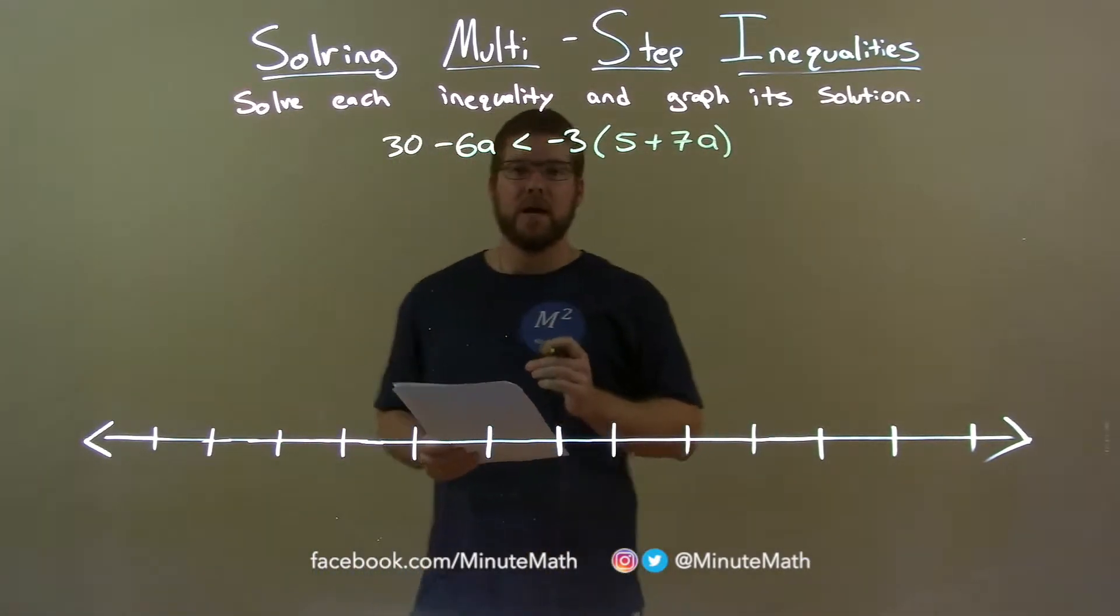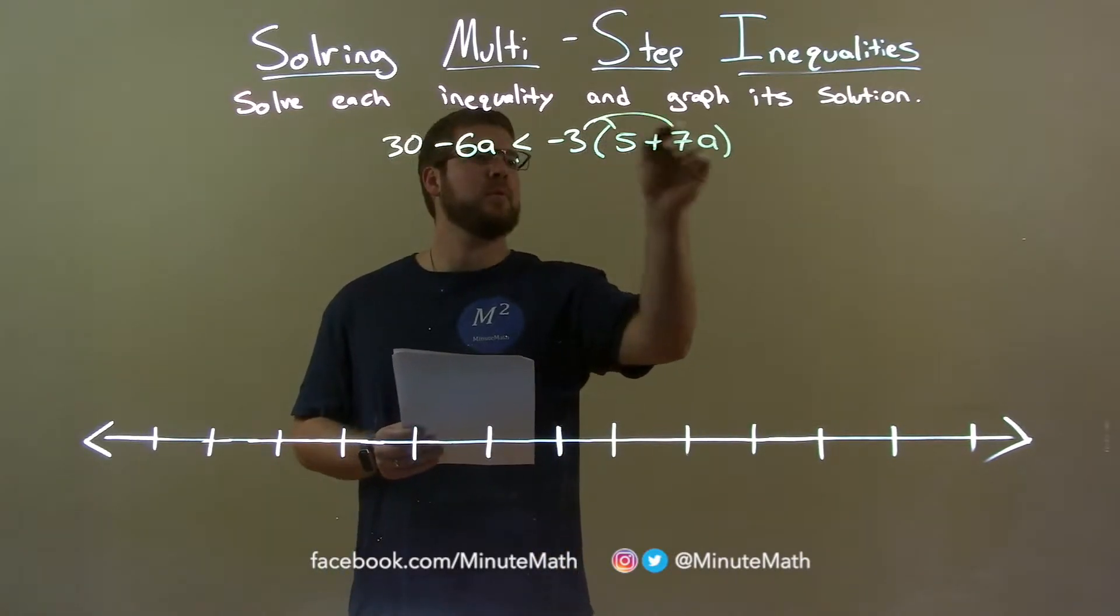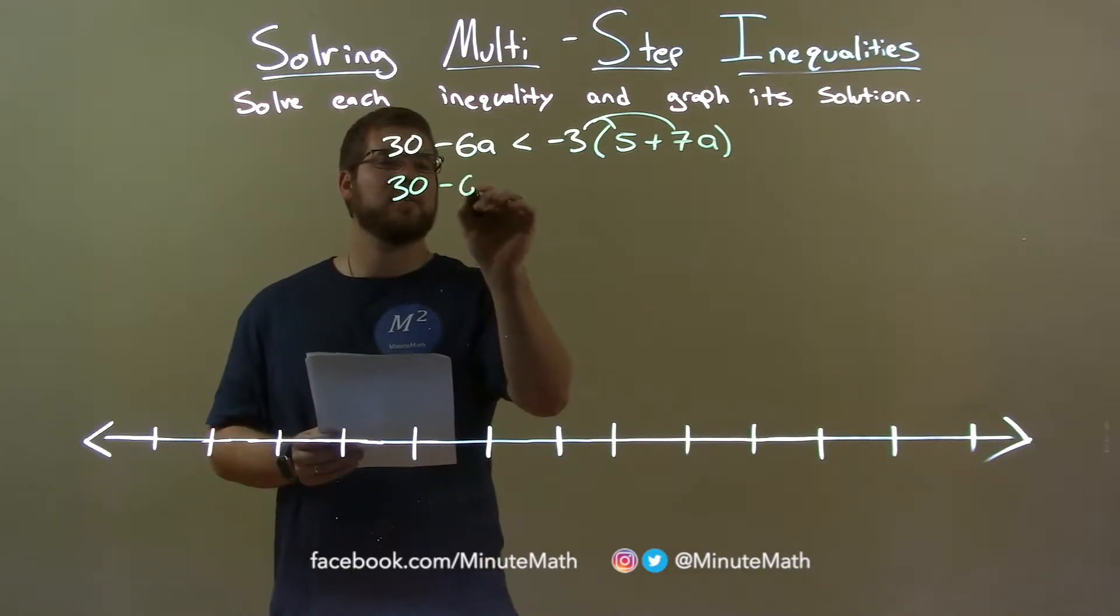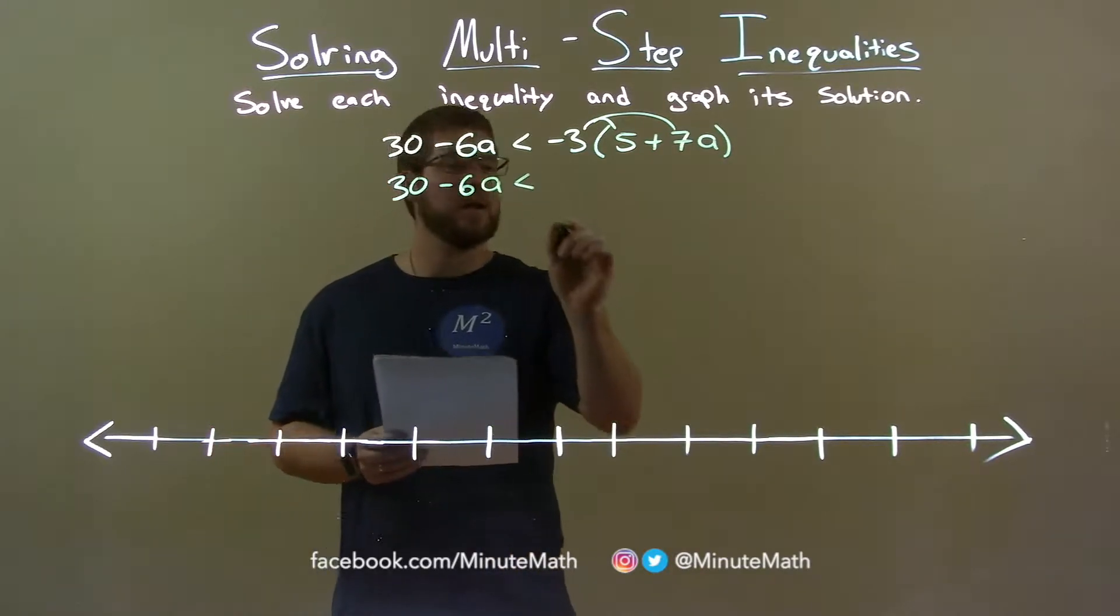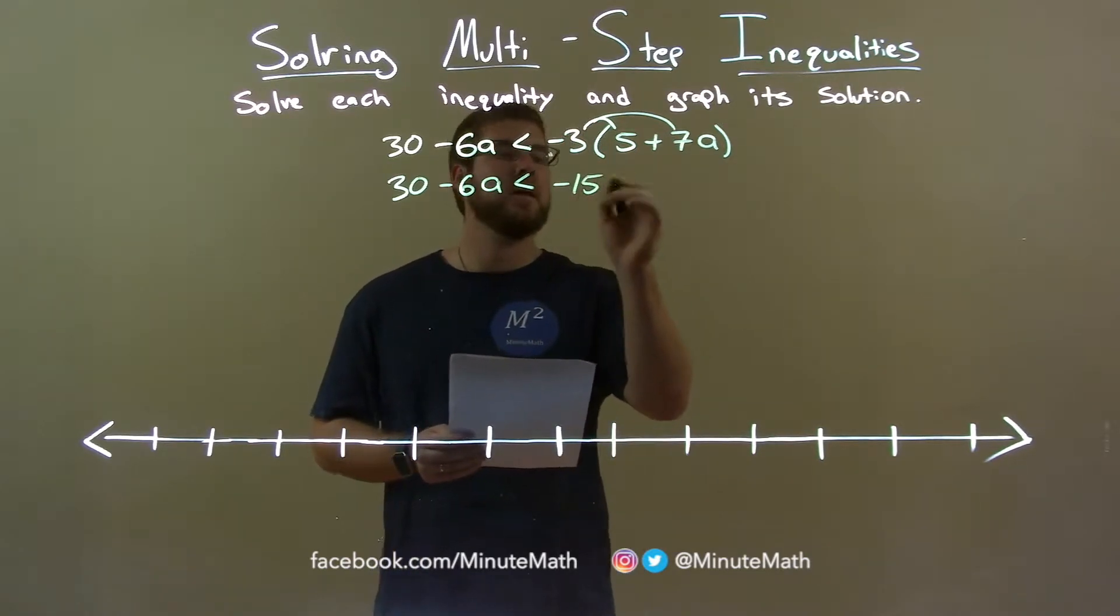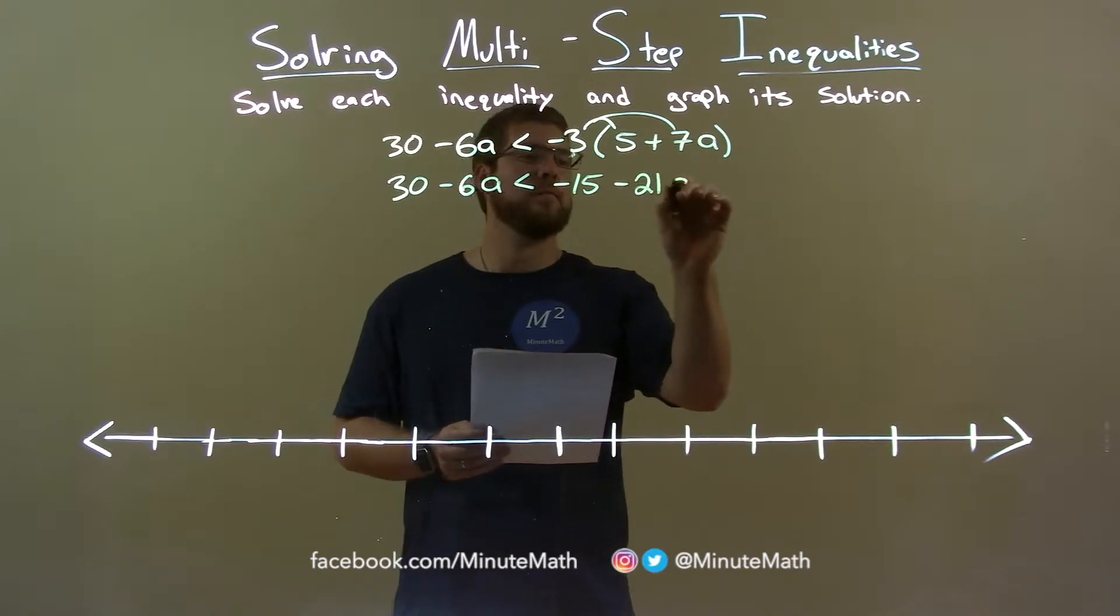Well, to get a by itself, I want to first distribute this negative 3 to both parts there. So, the left-hand side stays the same, 30 minus 6a. The right-hand side, negative 3 times 5 is negative 15 and negative 3 times 7a is negative 21a.